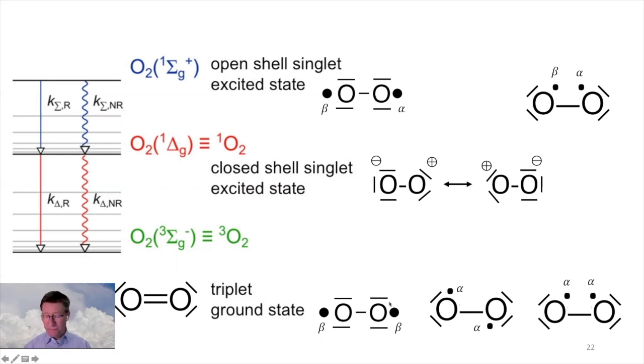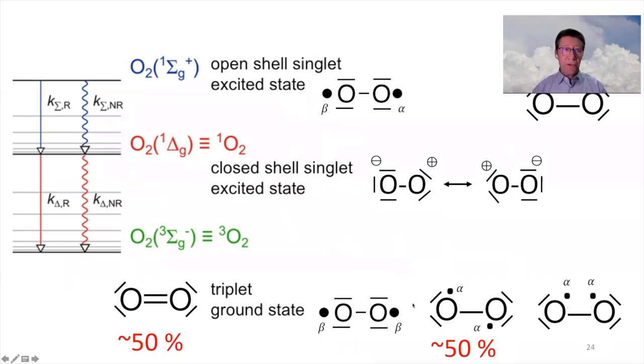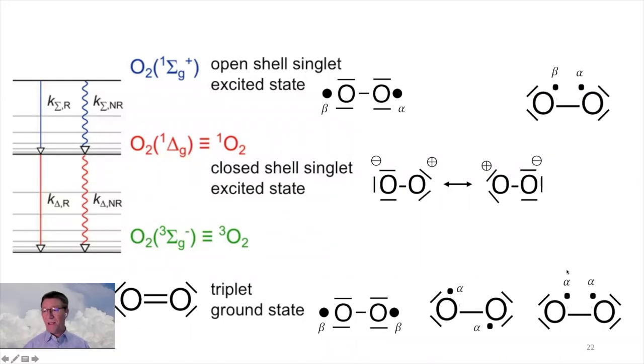And okay, we can move the electron pairs or the radicals. So these three structures, they all represent in a similar way the triplet ground state of molecular oxygen. As discussed before, these three structures here on the right, they represent about 50% of the character.